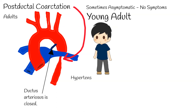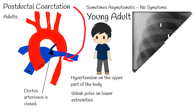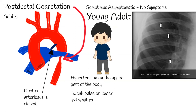The classical picture: a younger adult comes to the doctor's office with hypertension on the upper part of the body and upper extremities, and lower pressure with weak pulse on the lower extremities. To supply blood to the lower part of the body, the organism develops collateral circulation via the internal mammary artery and intercostal arteries. The intercostal arteries become bigger and cause notches on the lower border of the ribs. Weak pulse on the feet and rib notches on X-ray are classical findings for aortic coarctation.